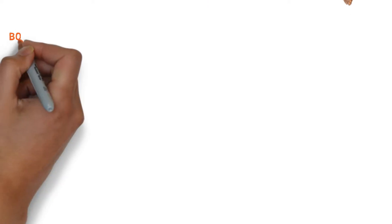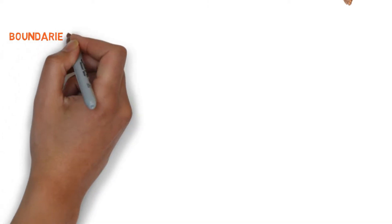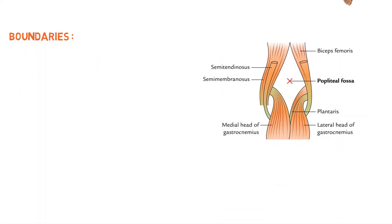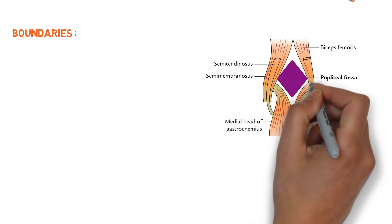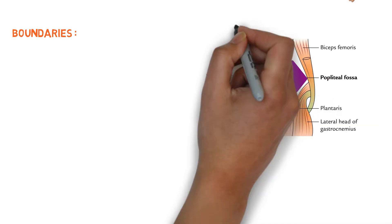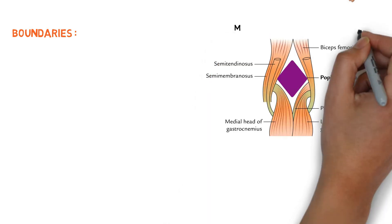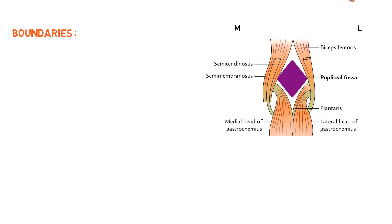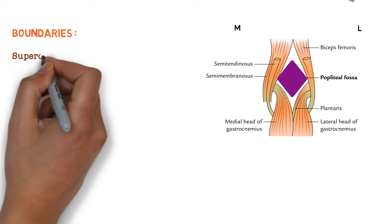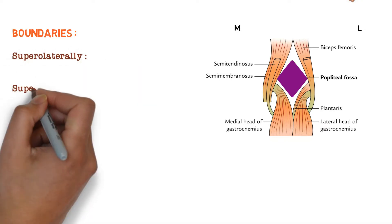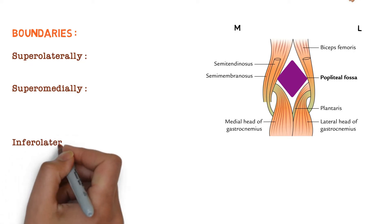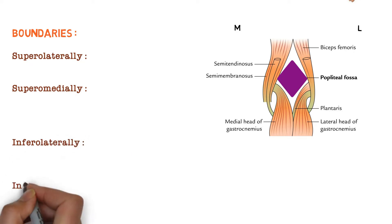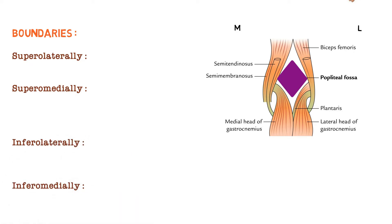Now let's talk about the boundaries of Popliteal Fossa. Look over this diagram. This is a diamond-shaped depression — this is the medial side and this is the lateral side. We are dividing the boundaries into four parts: superolaterally, superomedially, inferolaterally, and inferomedially.